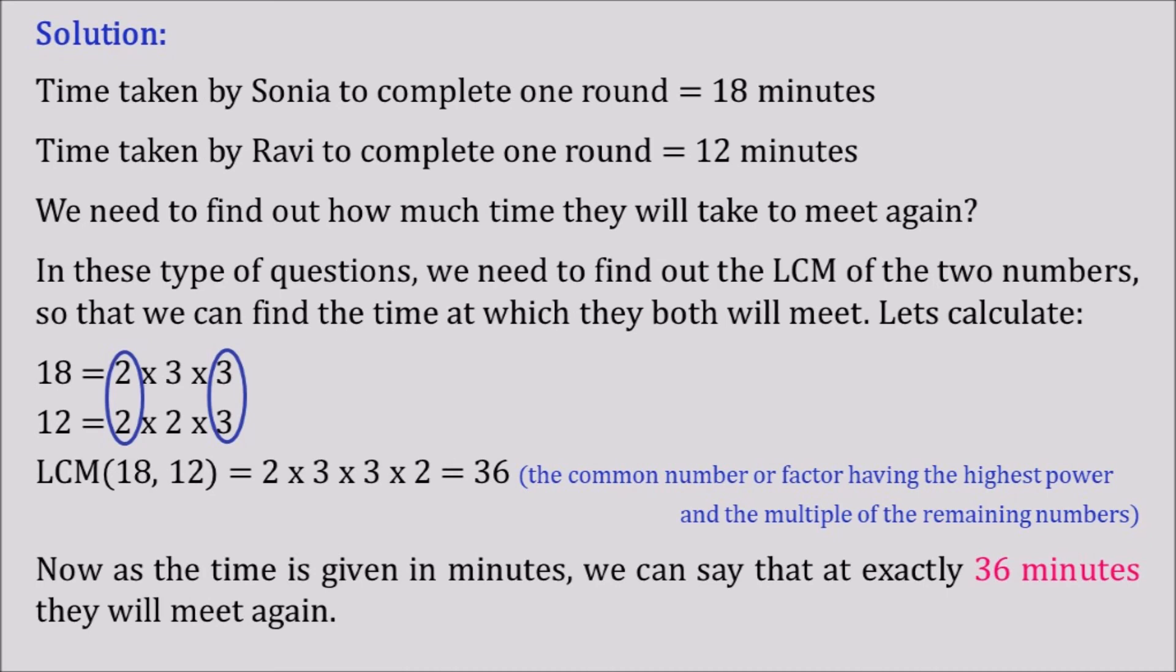Now as the time is given in minutes we can say that at exactly 36 minutes they will meet again. Because we got the LCM as 36 and we have taken 18 minutes and 12 minutes. For that reason we could easily say that they both will meet once again at 36 minutes.